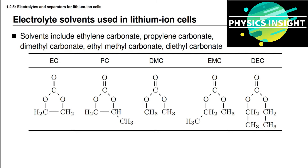Each of these solvents has slightly different properties. Some of them become essentially solid at temperatures below around 0 degrees Celsius, so these solvents are not appropriate for battery cells that must operate at low temperatures. Others cause the cell to degrade more or less rapidly. Even though the solvent does not participate in the normal reaction of charging and discharging a battery cell, it can participate in undesired side reactions that slowly cause the cell to deteriorate over time. To get the most desirable properties — working well at cold and warm temperatures without quick degradation — these solvents are often mixed together in different ratios.